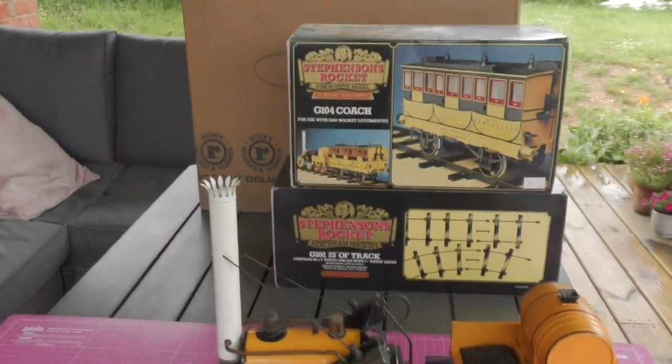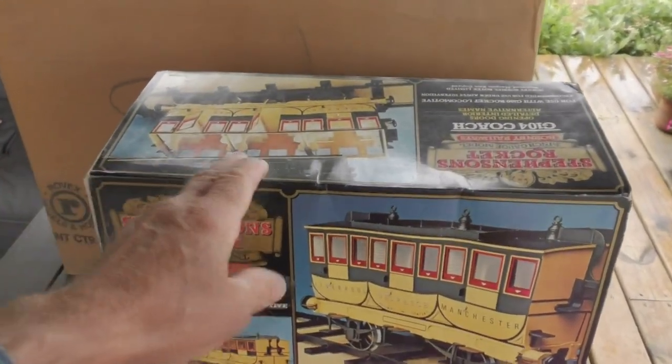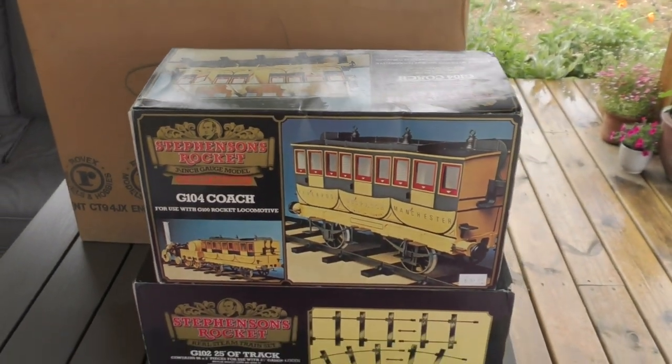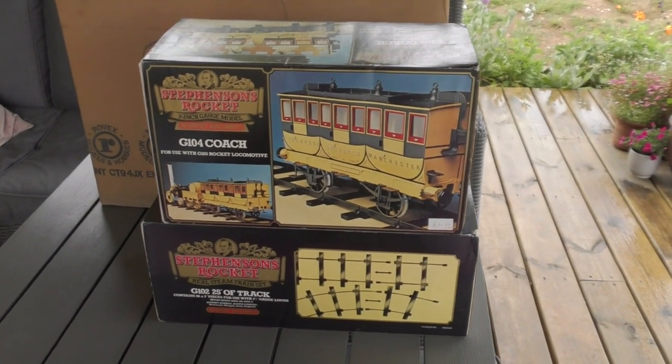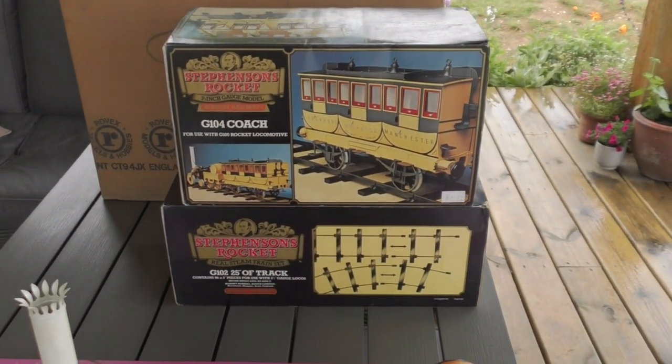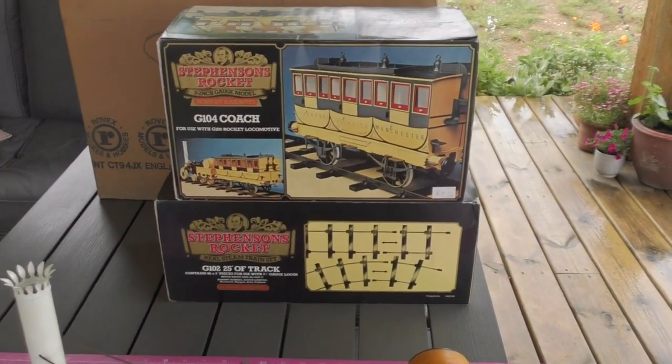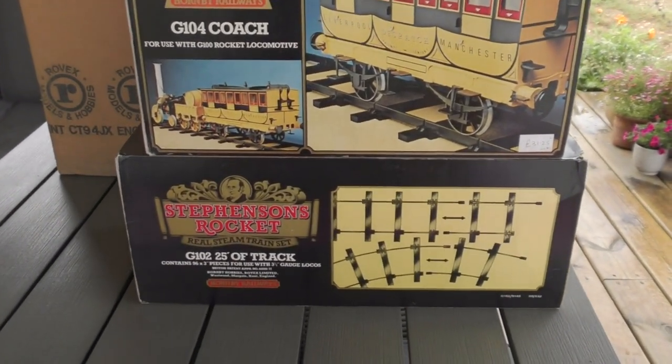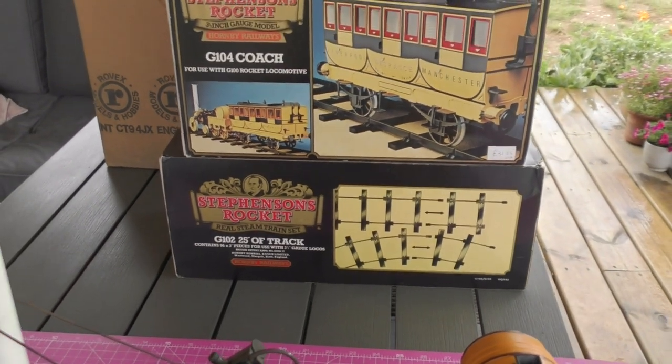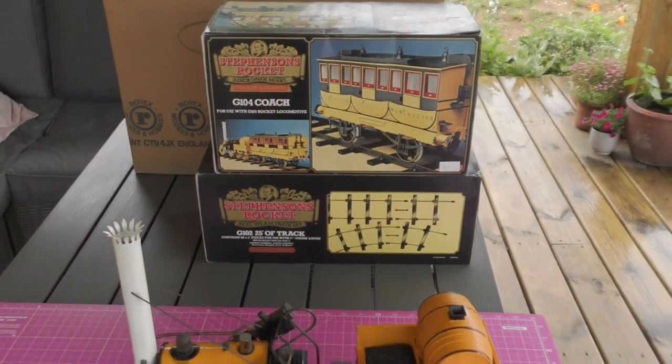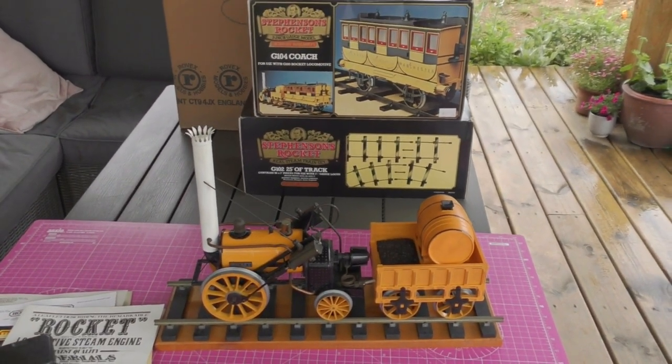I've been up in the roof and I've managed to find the original box and a couple of other items. Sadly the boxes have suffered a bit up in the roof but the items I think they're going to be okay. We've got a coach to go behind it and an extra box of track. I do think at some point we'll be able to assemble a fairly decent length of track. It says on the box I believe that there's 25 feet of track in there. If we've got that same amount in the main box that's 50 feet of track, so that should really be quite good fun if we can get this recommissioned.